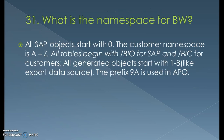What is the namespace for BW? All SAP objects start with 0. These are the SAP standard objects which start with 0. You will not be able to create any objects starting with 0 because they are SAP standard ones. If you see objects like an info object, cube, or DSO starting with 0, it means it's SAP standard and comes by default with the software.